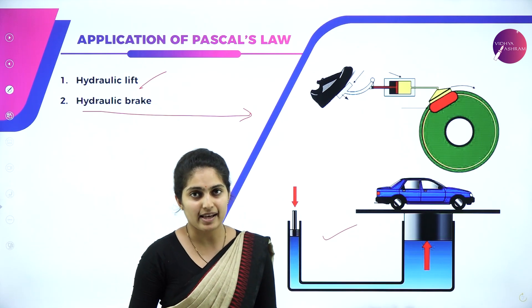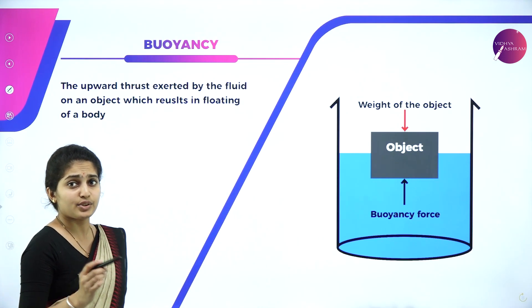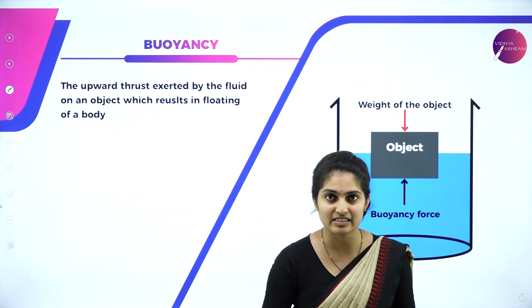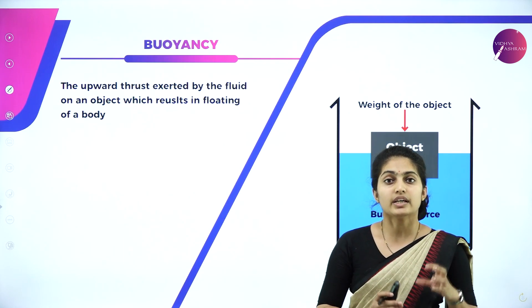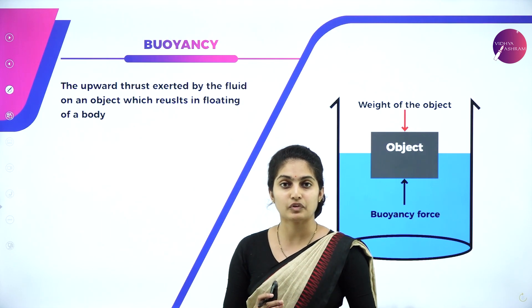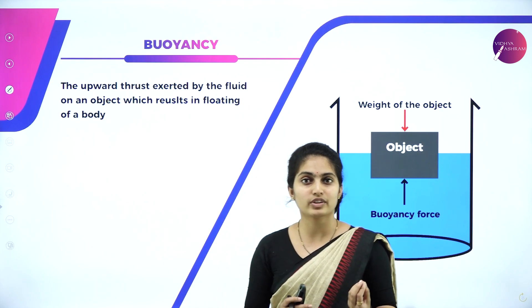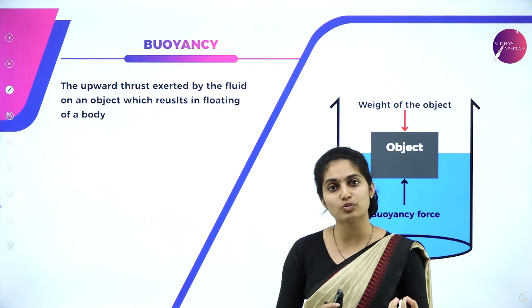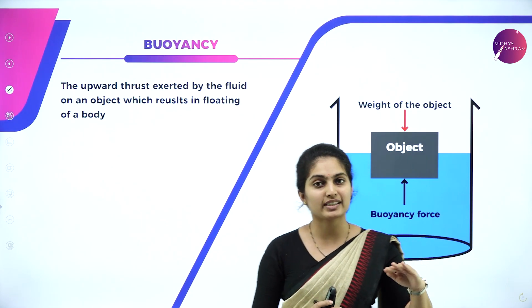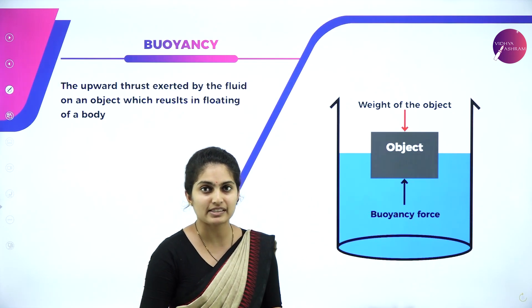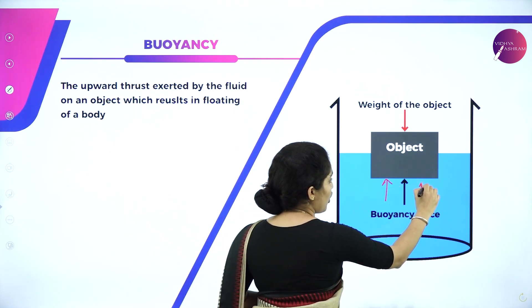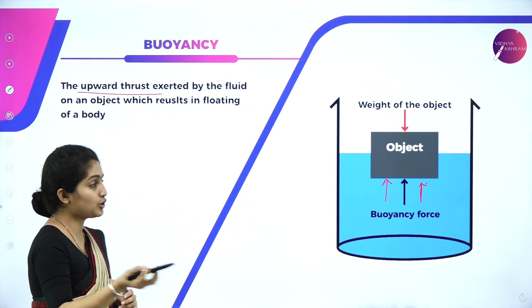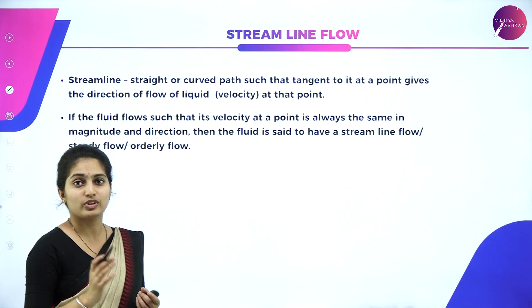Next we move to buoyancy. In buoyancy, there is a liquid with a certain density, and an object is placed in it with a certain weight. If you drop a light object — like an empty plastic bottle into a pond — it floats. This is because the weight of the object is much less than the water's density. A force called buoyant force acts upward, which is the upward thrust exerted by a fluid on a lighter object, resulting in the floating of the body.